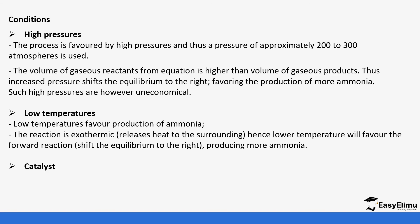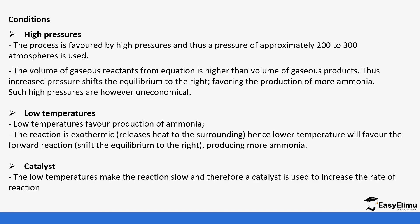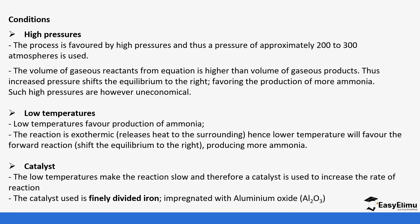However, low temperatures also have a disadvantage because the reaction would be too slow. That is the reason why there is an introduction of a catalyst. The low temperatures make the reaction slow, so a catalyst is used which increases the surface area for the reaction. The catalyst used for this reaction is finely divided iron — it is finely divided to increase the surface area for the reaction, and it is intentional how fine it is.